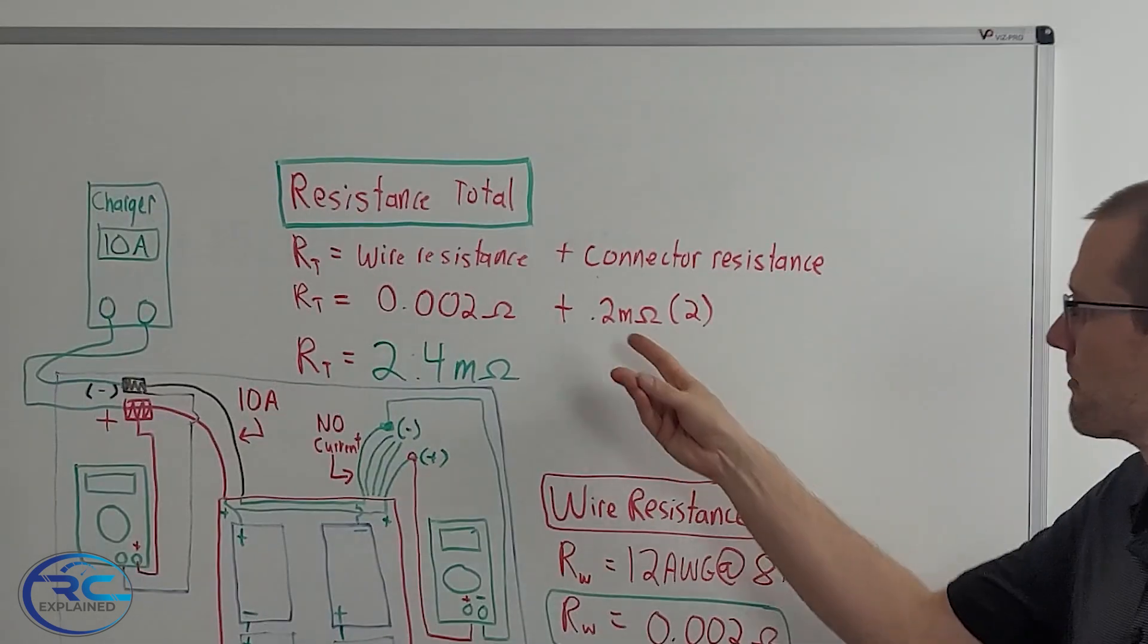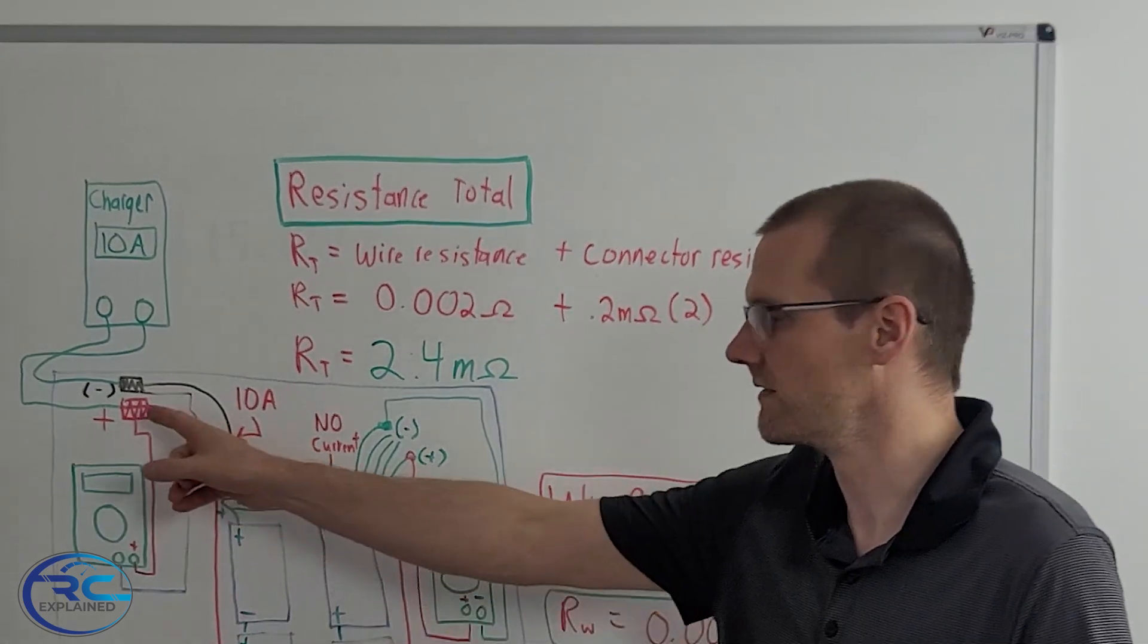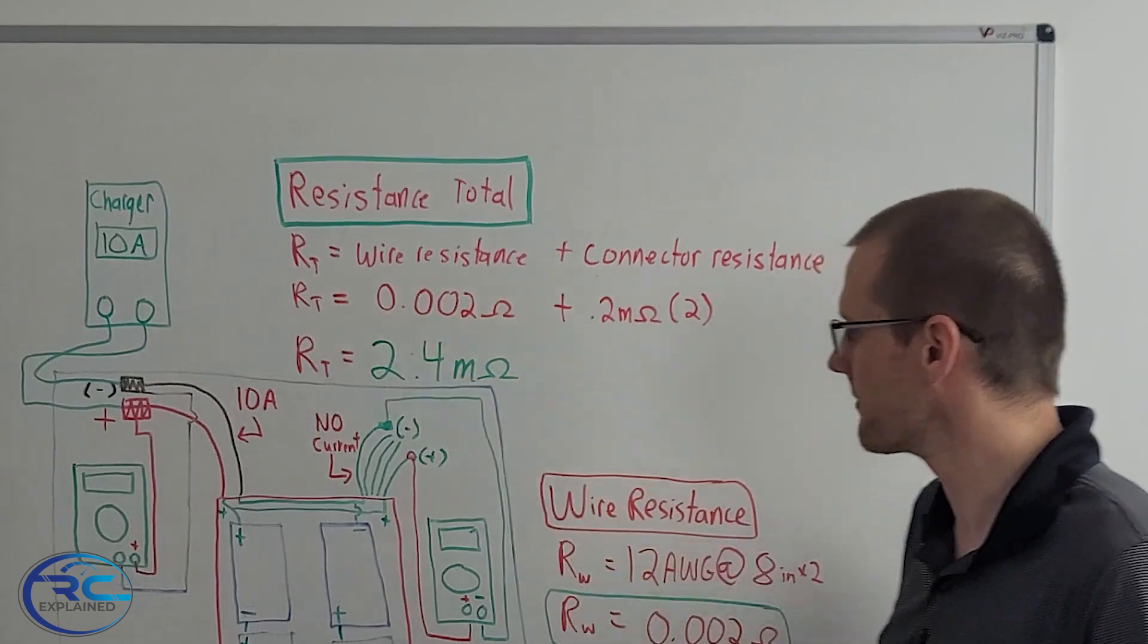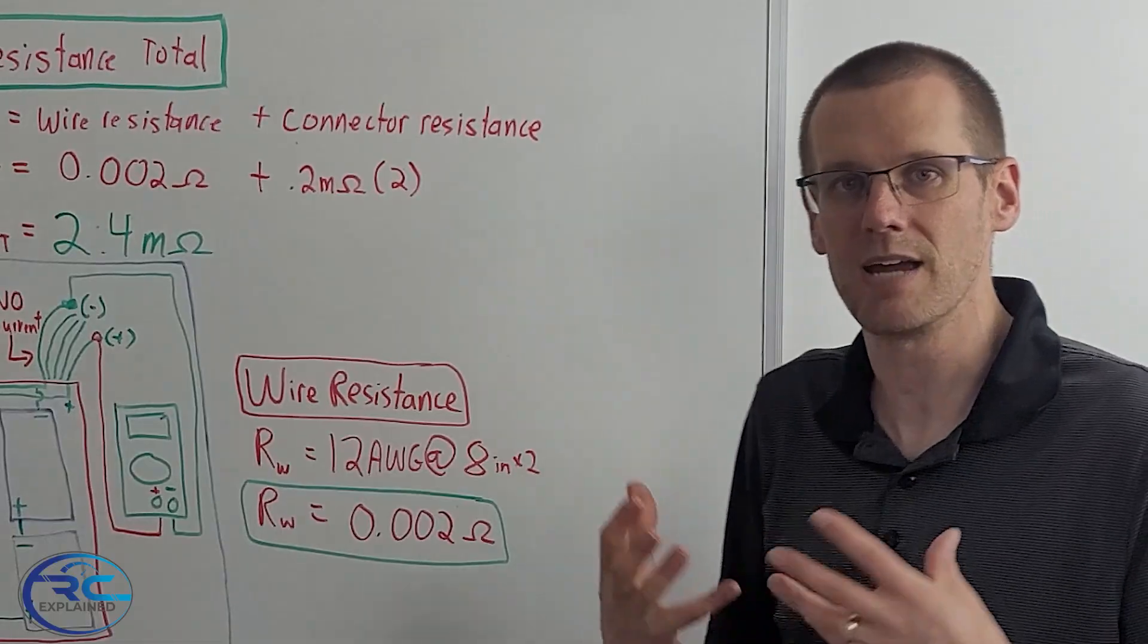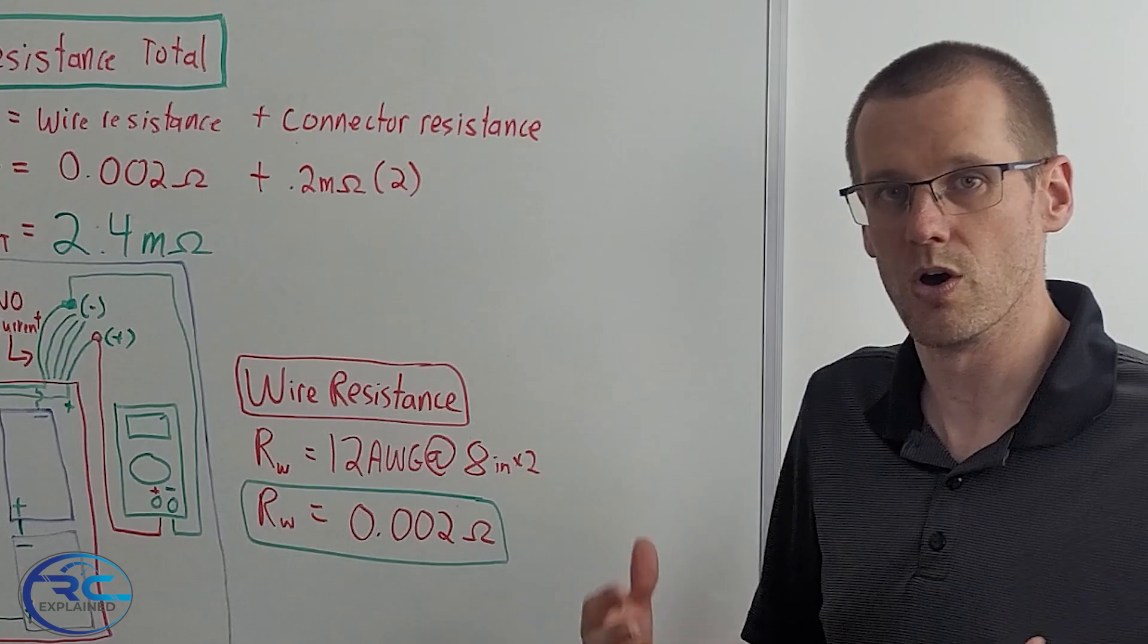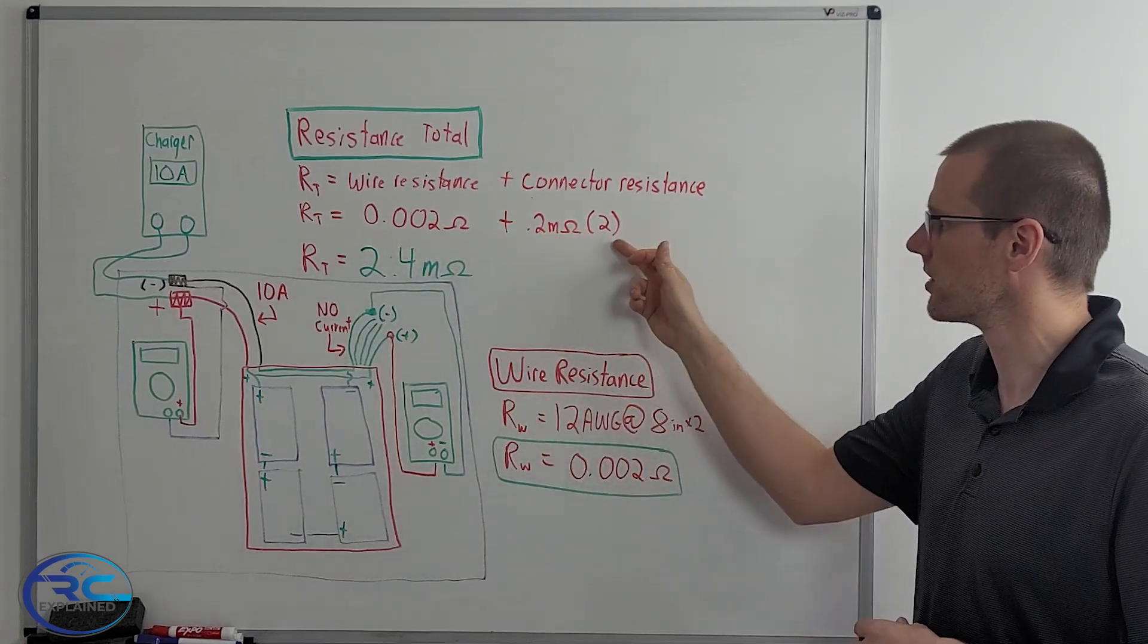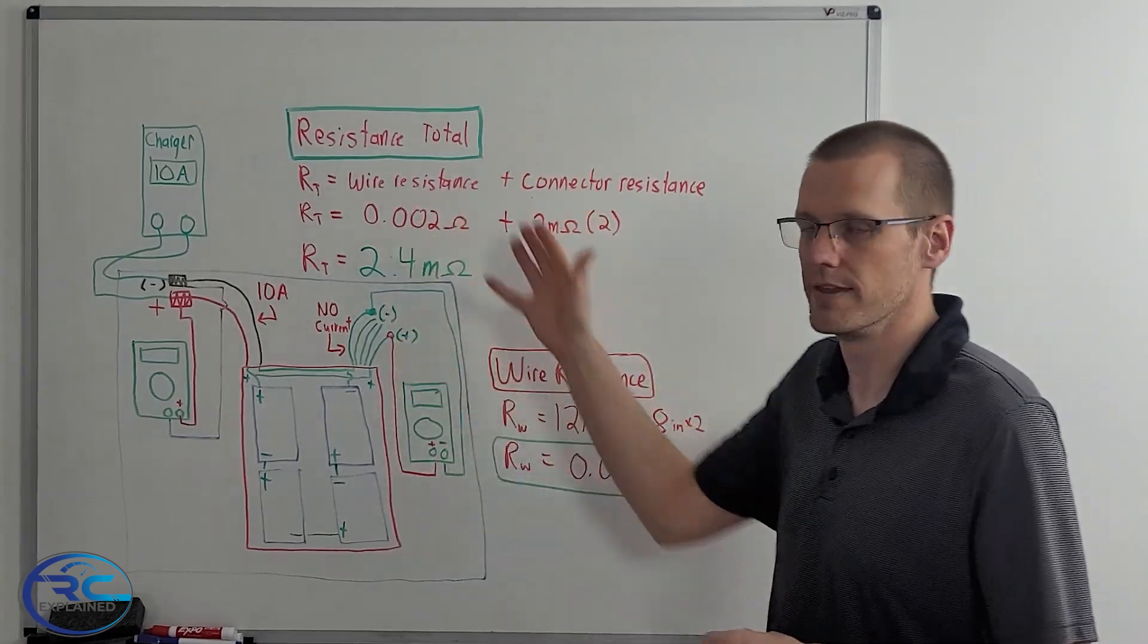The AS150 said 0.2 milliohms. I don't know exactly what they mean by 0.2 per connector, if it's actually an individual or if it's a pairing. Either way, it's not going to make a huge difference to what we're talking about today. So when we sub those values in, we have to look at the wire resistance. And the wire resistance for 12 gauge at about eight inches times two of those is going to be about 0.002 ohms, depending on the chart that you look at. It's somewhere right around that mark. When we simply add up the 0.2 milliohms plus the 0.2 milliohms times two, we get 2.4 milliohms of total resistance within this setup.